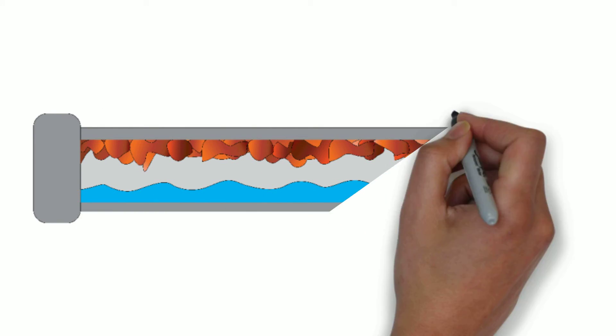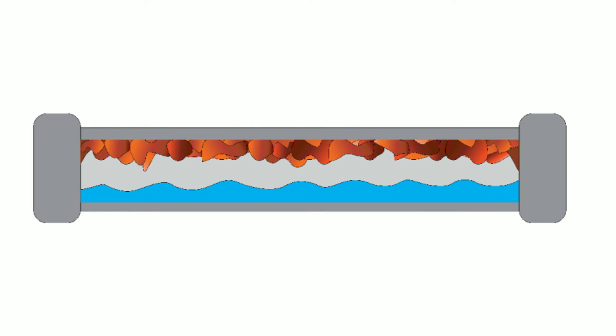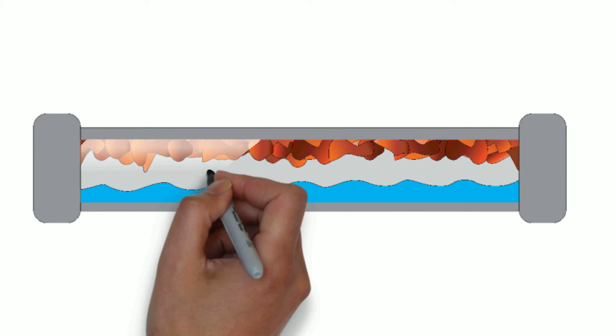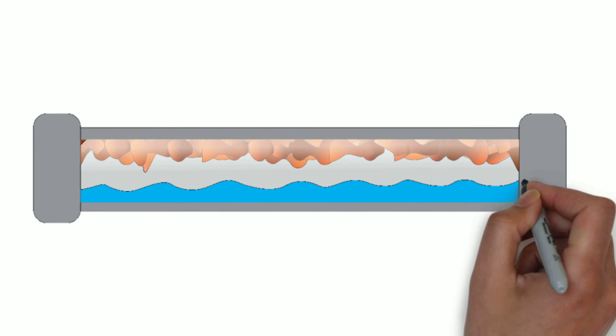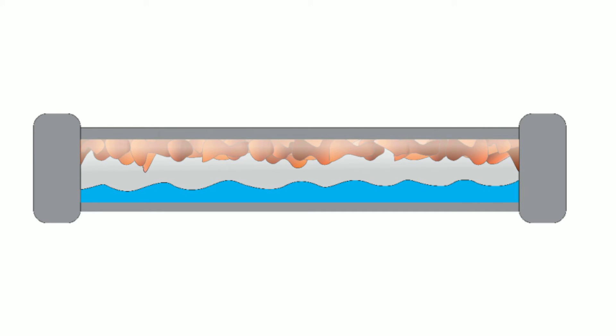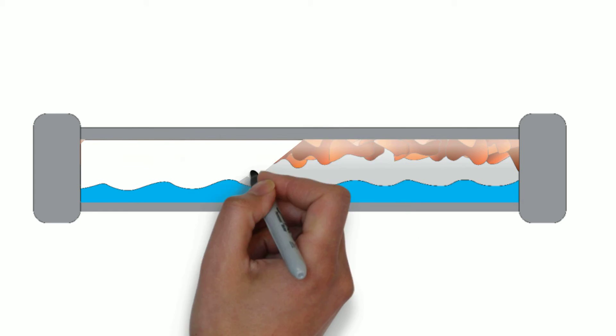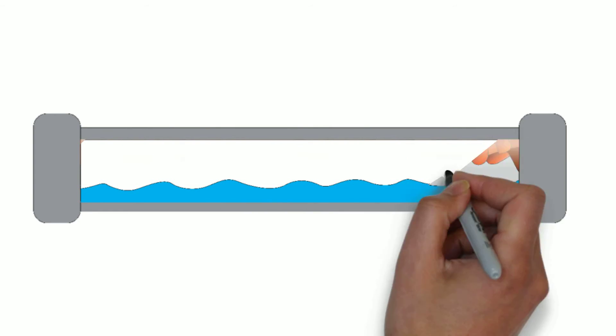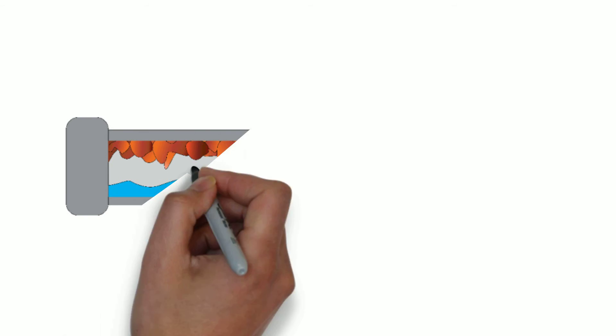To combat this, water and sewer departments add orthophosphate to the water supply. It's harmless for human consumption, and it coats the pipes, creating a barrier between the lead-based pipe and the water traveling into houses. But this process takes time. It can take weeks to significantly reduce the amount of lead leaching into a system.